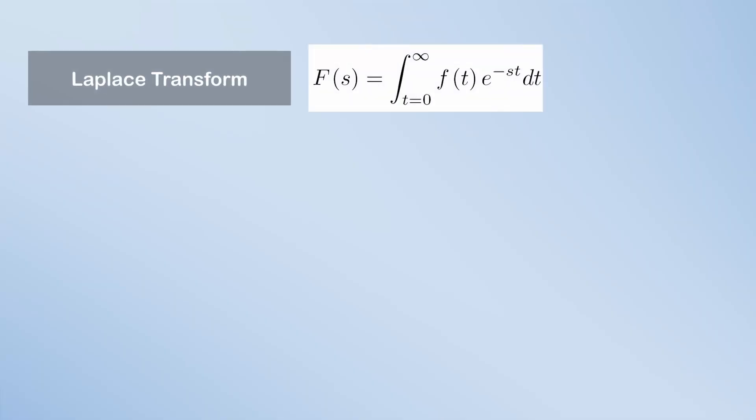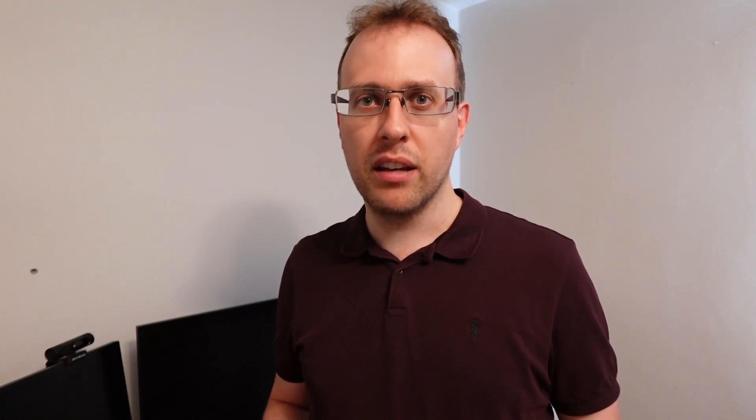We start with the Laplace transform, which converts the time domain signal into an S domain signal, where the S is complex. If you drop the real component of S and just use the imaginary component, j times omega, then you can rewrite the Laplace transform as big F of j times omega. You still have the integral over time, and the complex exponential becomes an imaginary exponential.